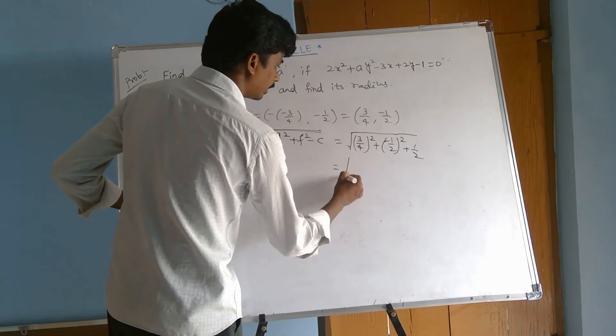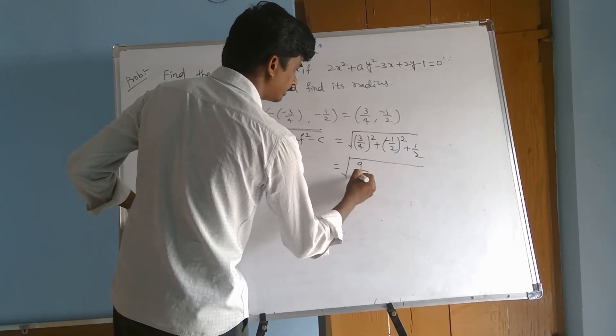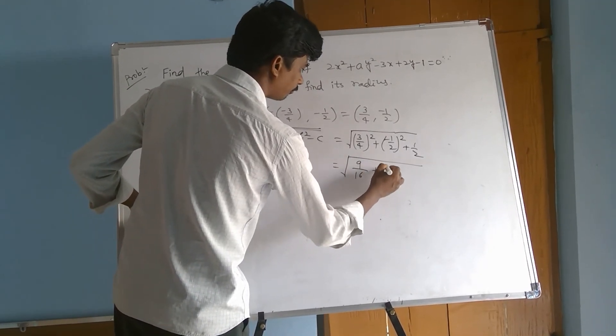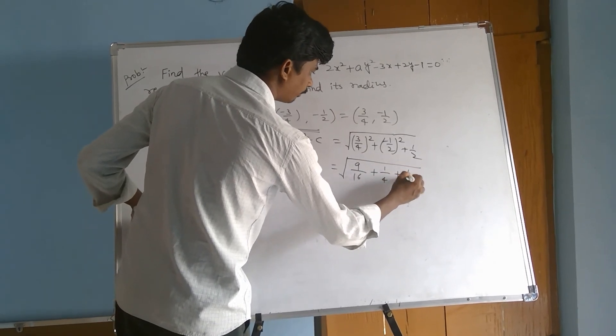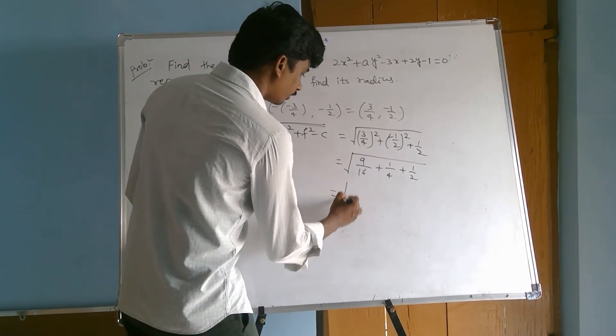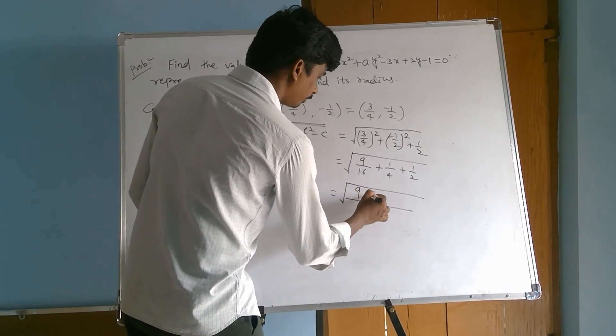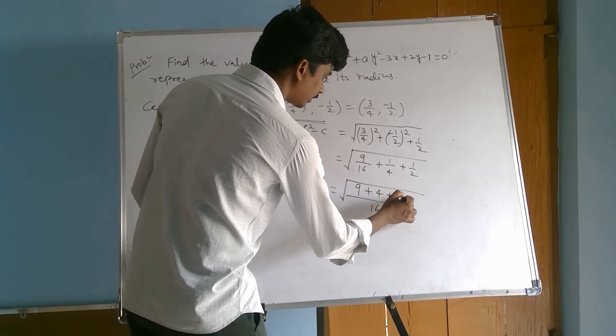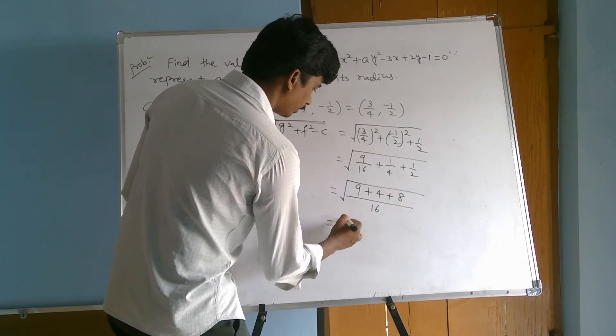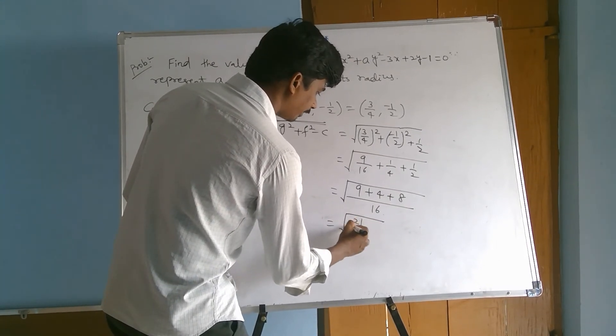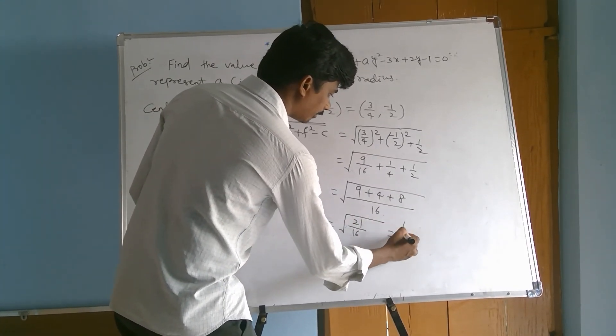That equals root of g squared plus f squared minus c. That equals root of 9 by 16 plus 4 plus 8, which is 9 plus 4 plus 8, root 21 by root 16, that equals root 21 by 4.